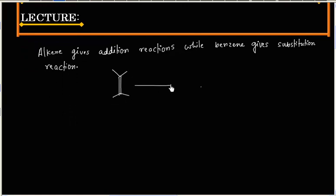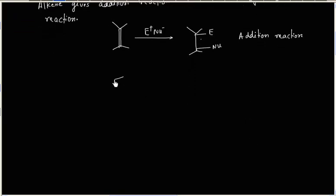If I have a typical alkene, an electrophile and a nucleophile gets added. That is an addition reaction. In case of benzene, a hydrogen gets substituted by an electrophile.